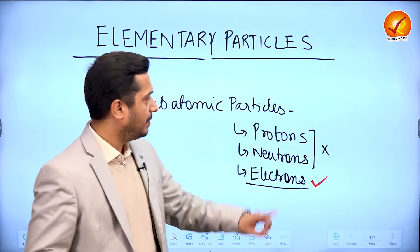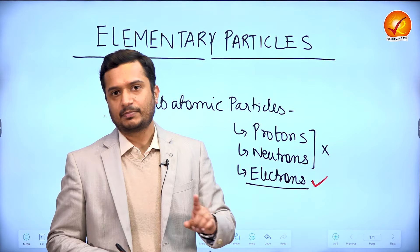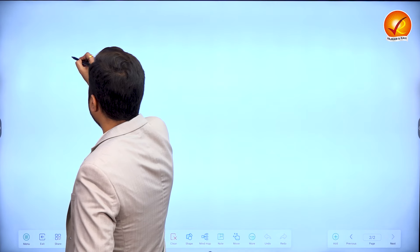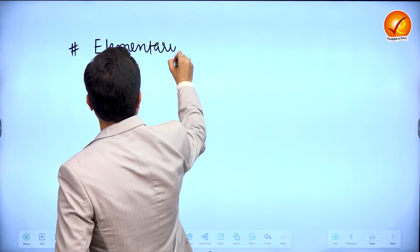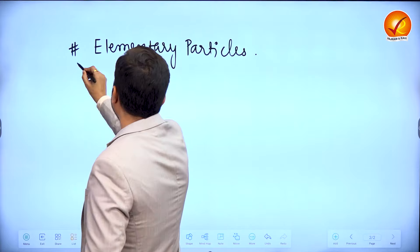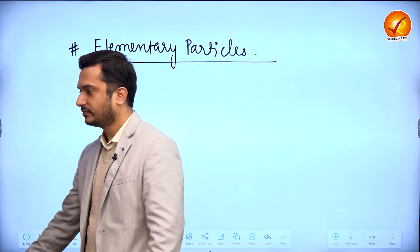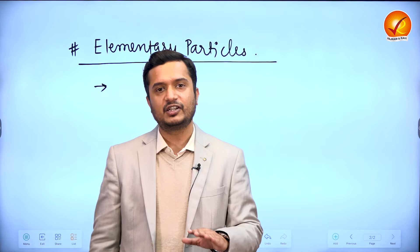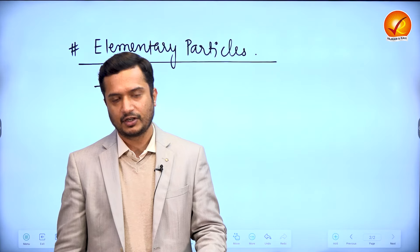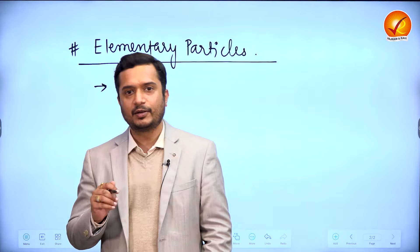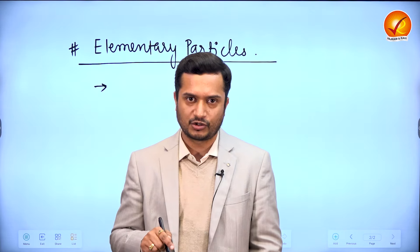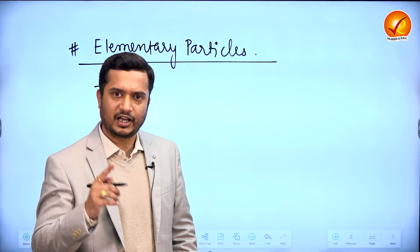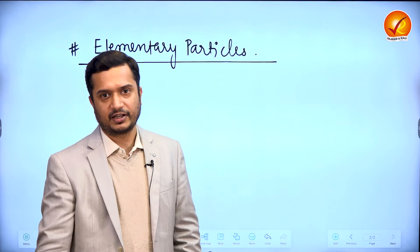Electrons are the simplest particles themselves, but protons and neutrons are not — they are made up of still smaller particles called elementary particles. Elementary particles are the smallest particles themselves; they are not made up of any other smaller particles. In a way we can say that elementary particles are the building blocks of the universe — the whole universe is made up of these elementary particles, and all other particles and matter in the universe are made up of elementary particles only.